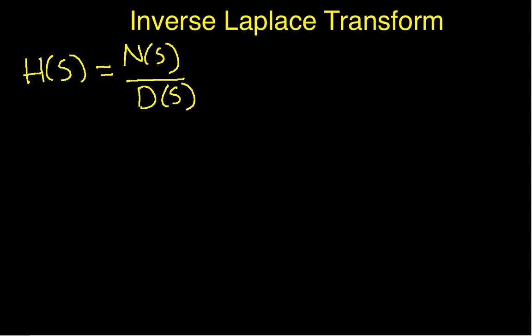In this video we're going to describe how to deal with the situation where you have complex roots of the denominator polynomial. We've already sort of looked at this in the previous videos. It turns out that complex roots of the denominator polynomial means that you're going to have sines and cosines, or exponentially damped sines and cosines. What I'd like to do in this video is go through and derive one way that you can have MATLAB do a partial fraction expansion of your H(s), and then by inspection determine what the sines and cosines ought to look like.